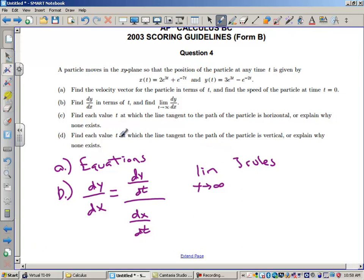Now part C says, find each value t at which the line tangent to the path of the particle is horizontal, or explain why none exists. So how can the path be horizontal? What does it mean for the path to be horizontal? Horizontal means what kind of slope? What kind of slope? And you should either put a zero here or it does not exist. And then you're going to have to ask yourself, how can I make my slope zero? How can this be zero? Do I set the top equal to zero or the bottom equal to zero? Then you're going to have to figure out, if that's possible, can that equal zero or can it be undefined?